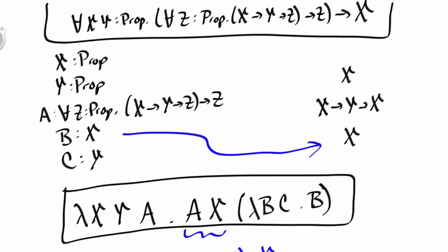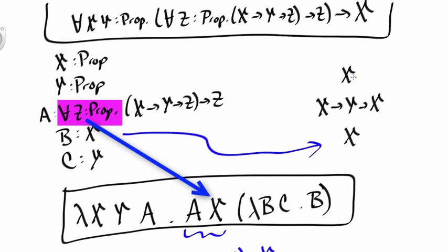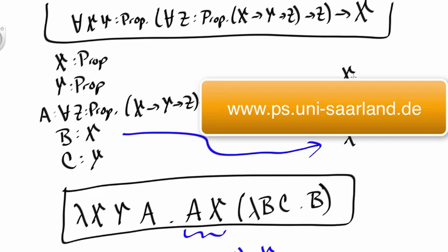The thing that was really new in this example was that we needed to instantiate the universal quantifier during the proof. In this case it was a very easy instantiation because we knew we needed to prove x, so if z were x we could make progress. Often these instantiations are the most interesting parts of a proof.